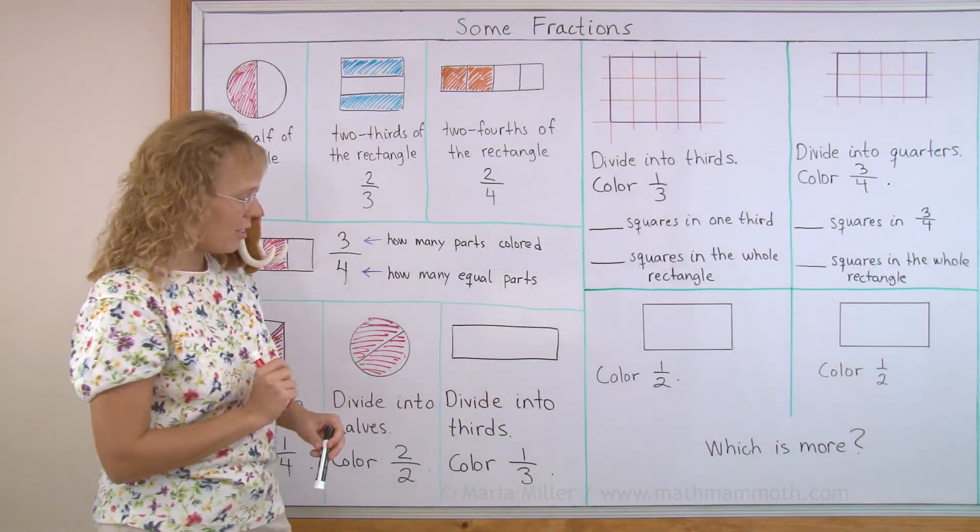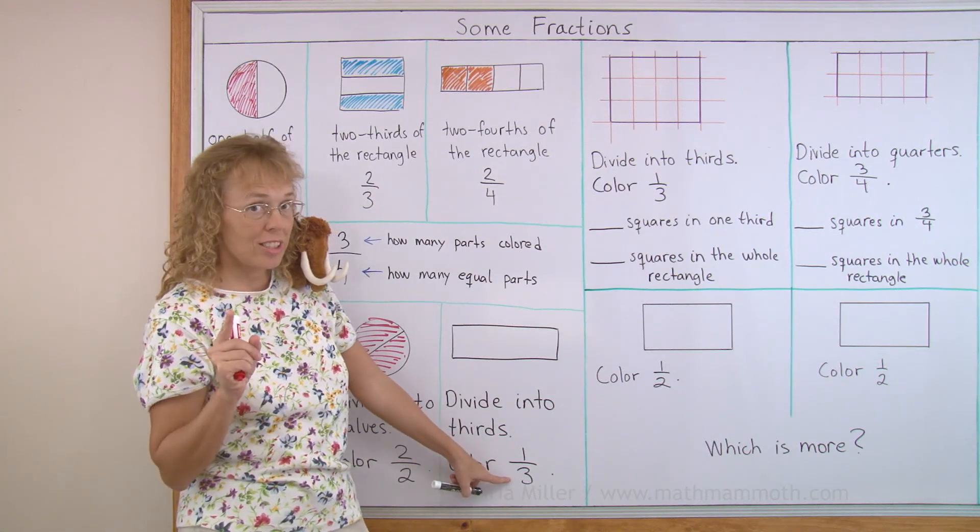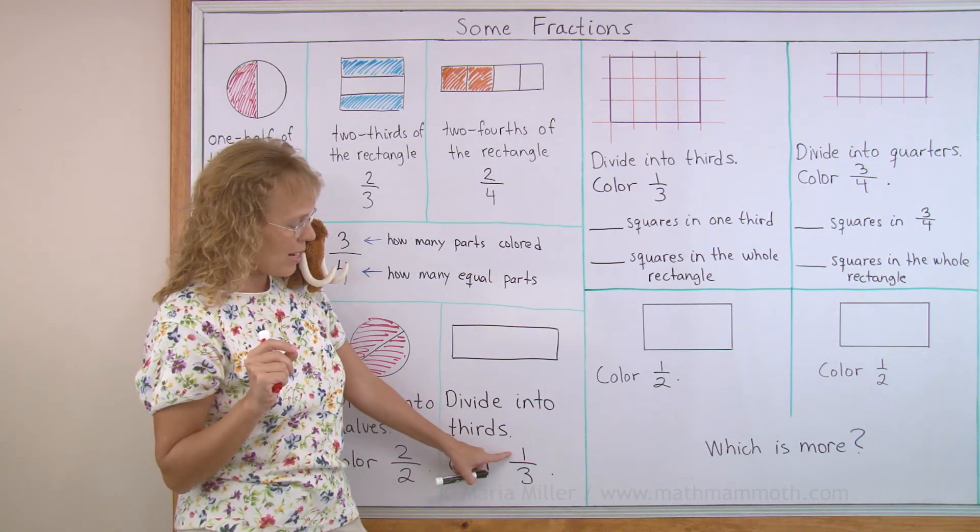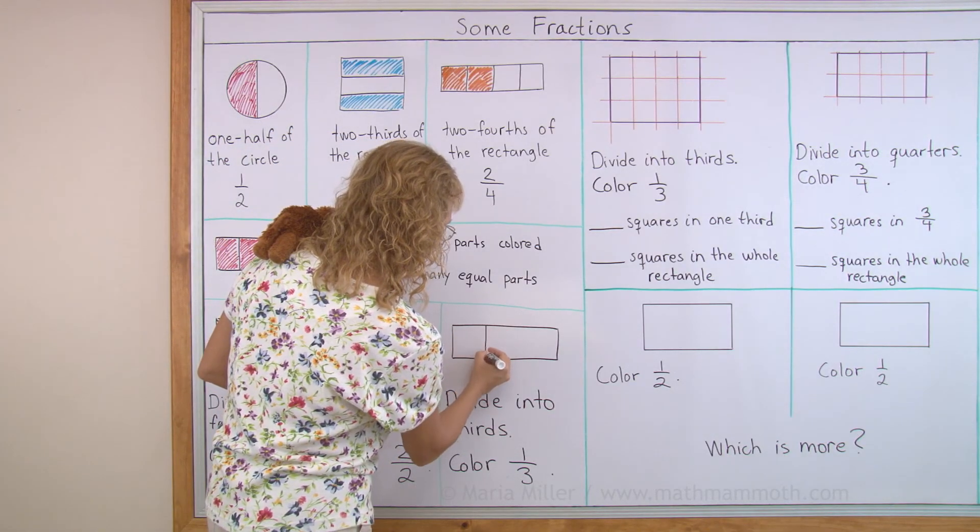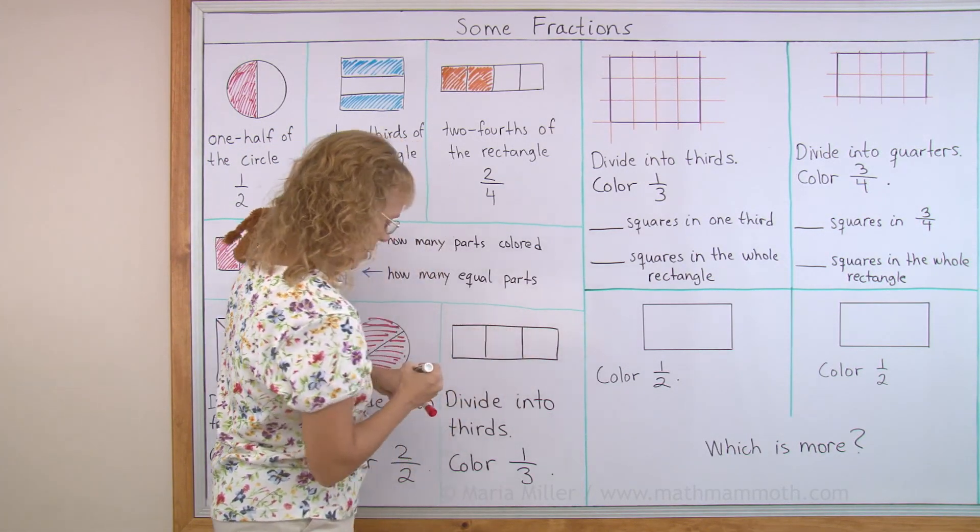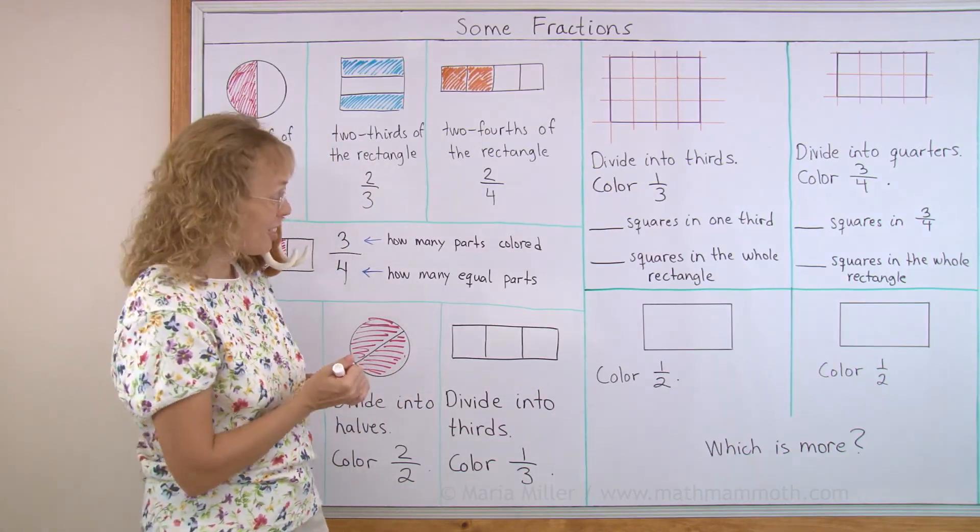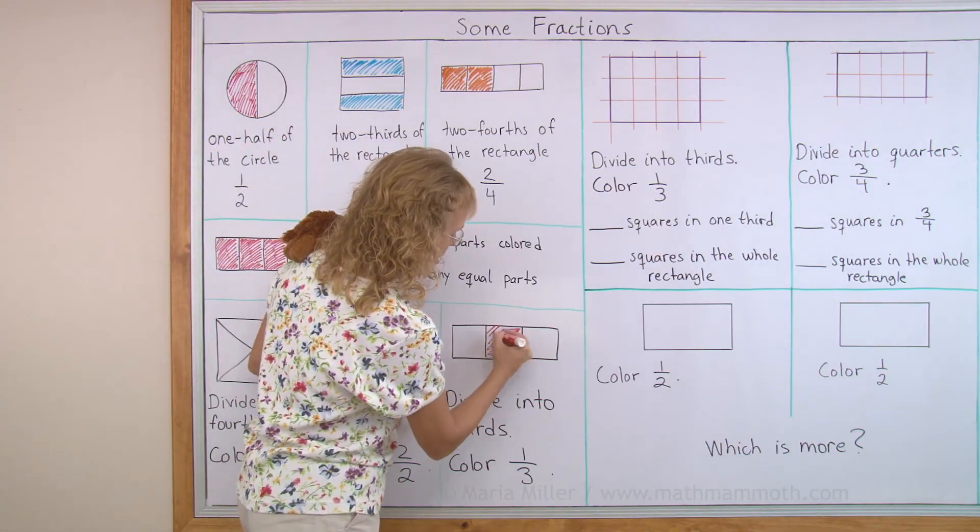Divide this into thirds and color one third. Thirds, it means three equal parts. Then color one third, whichever third you like.